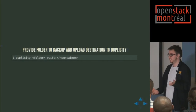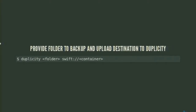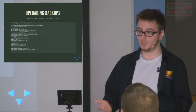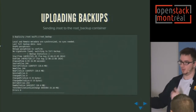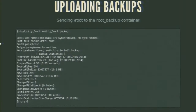How do you do backups with Duplicity? It's really simple. You provide the folder you want to backup and the destination. It's a bit like rsync — you have what you want to copy and where you want to copy it. In this case it uses a URL format: swift:// and then the container you want to send your backups to. The first time, it sends the entirety of the /root folder to the Swift container. It compresses the data, encrypts it, and sends it to Swift. We can see the raw delta size and total destination size change — about 10 megs uploaded.